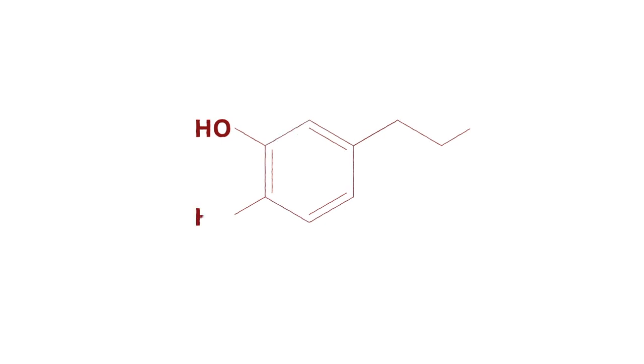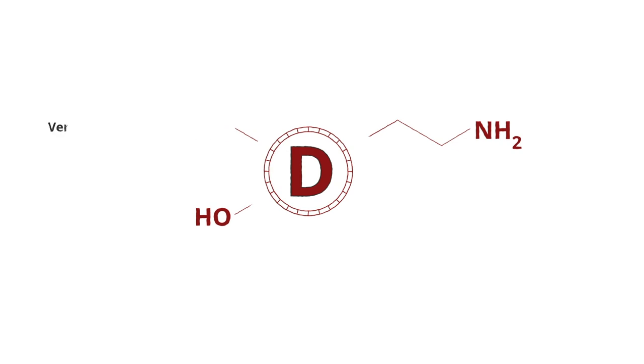Today, dopamine functions as a kind of universal currency for neuroscientists to measure the addictive potential of any drug. The more dopamine a drug releases in the brain's reward pathway, a brain circuit that links the ventral tegmental area, the nucleus accumbens, and the prefrontal cortex, and the faster it releases dopamine, the more addictive the drug.